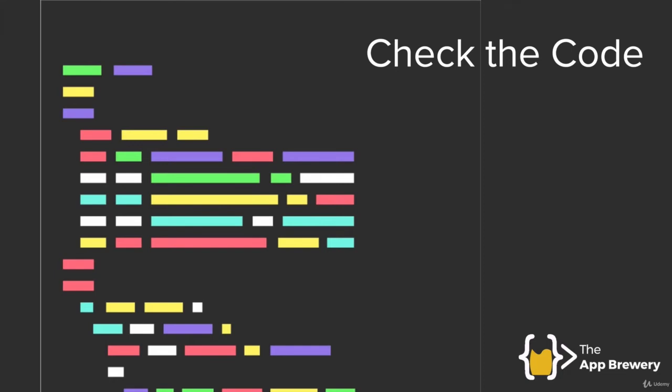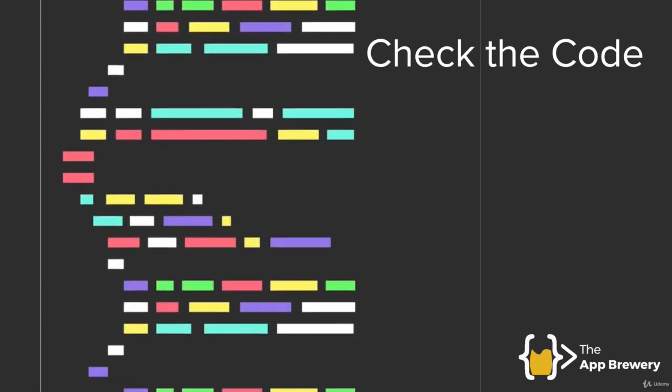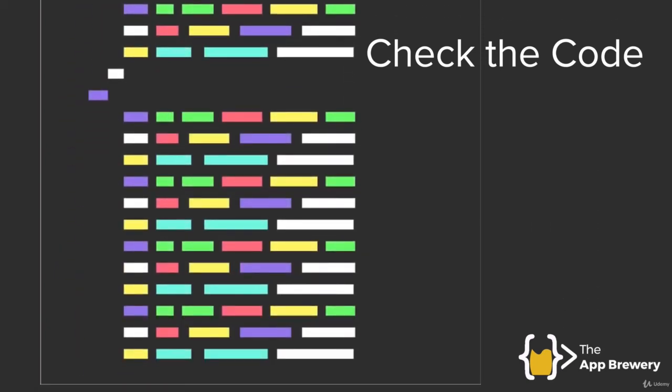The next step is you can check your code against my code. At the end of every tutorial module there is a completed project that you can download, and you can scroll through the completed code, compare it to your own, and see if there were any typos, any errors, any mistakes. If it helps you can even copy and paste sections from the completed code into your own module just to see if that line or that paragraph helped to fix the issue.